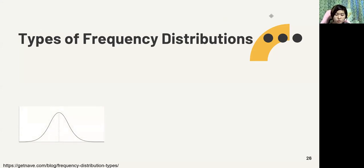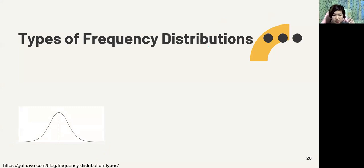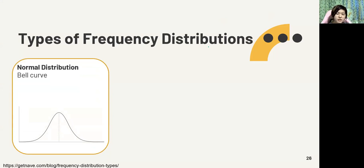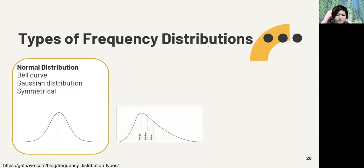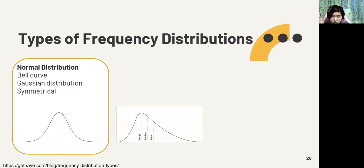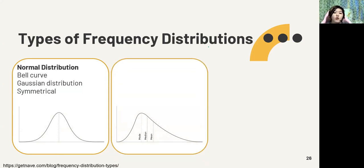Now let's briefly discuss types of frequency distributions. You might encounter this in other lessons. We have the normal distribution — it has a bell shape, also called a bell curve or Gaussian distribution. The average, median, and mode are all at the center. The data is symmetrical and not spread too far.